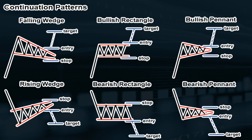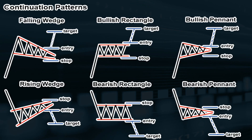As a little review: you've got your falling wedge, your rising wedge on the bottom left, bullish rectangle, bearish rectangle underneath that, bullish pennant, and your bearish pennant. There are also some others that are very similar to these.